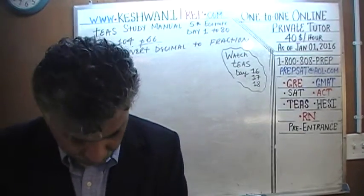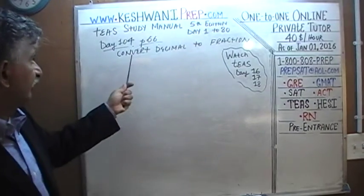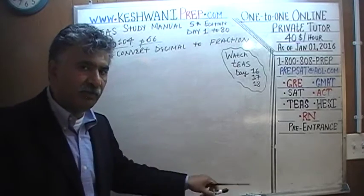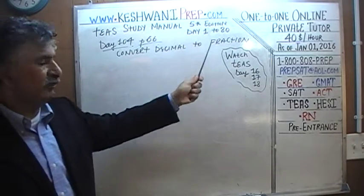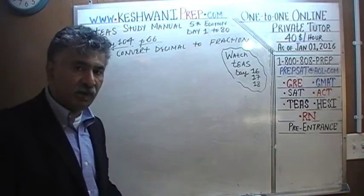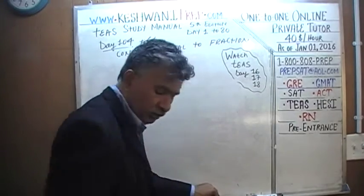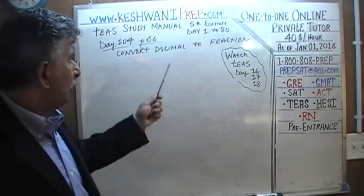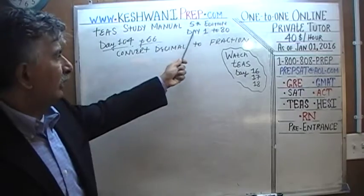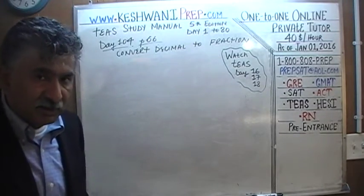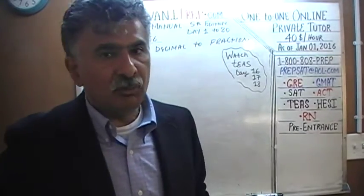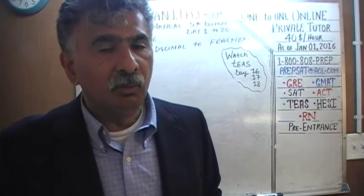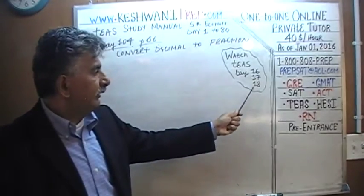Let's turn to page number 66. We are on page number 66. We are learning how to convert from decimals to fractions. We did a couple of problems on this concept from decimals and fractions yesterday — the two problems that appear in the book. Today we are going to do a few more for some extra practice. If you want more practice, you can always watch the videos from day 1 through 18. These particular concepts — how to convert from decimal to fraction to percentage, percentage to decimal to fraction, back and forth — are covered on day number 16, 17, and 18.